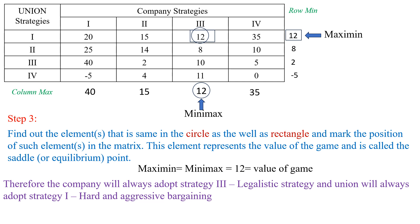The saddle point value 12 is located at the first row and third column of the matrix. Therefore, the union will select strategy 1 (hard and aggressive bargaining) and the company will select strategy 3 (legalistic strategy). The company will always adopt the legalistic strategy and the union will always adopt hard and aggressive bargaining.